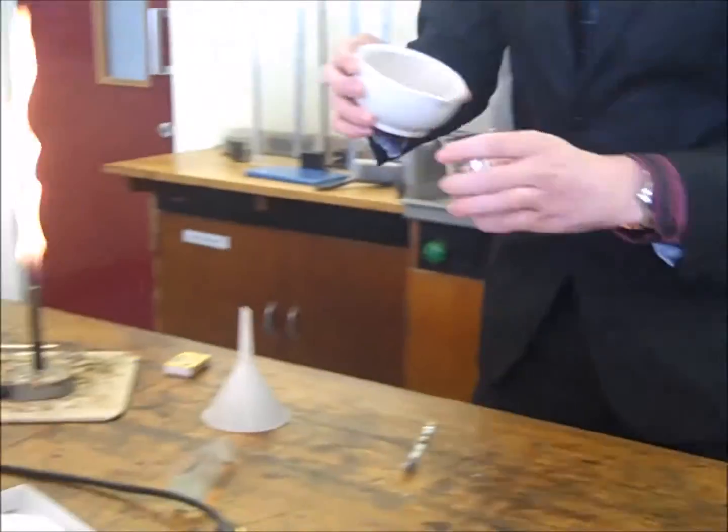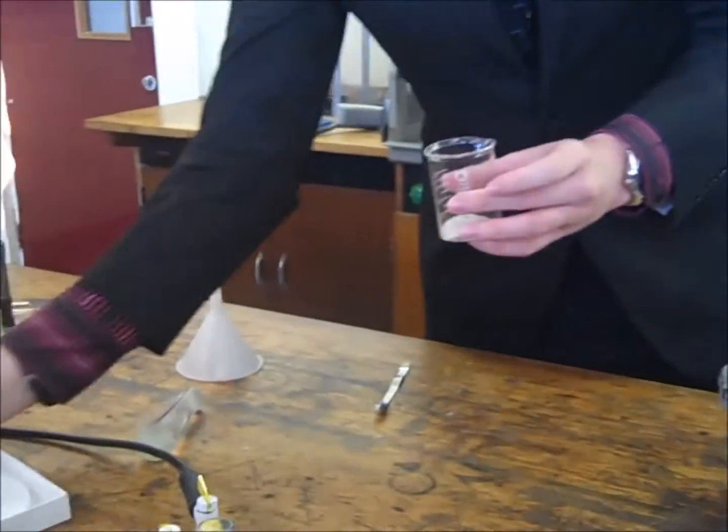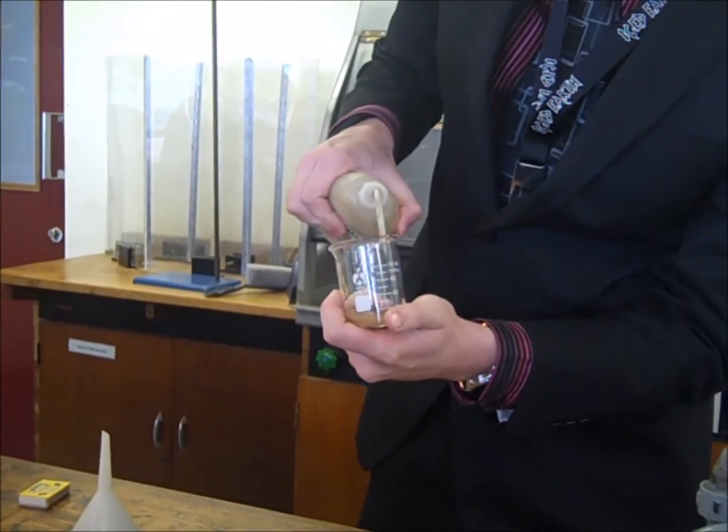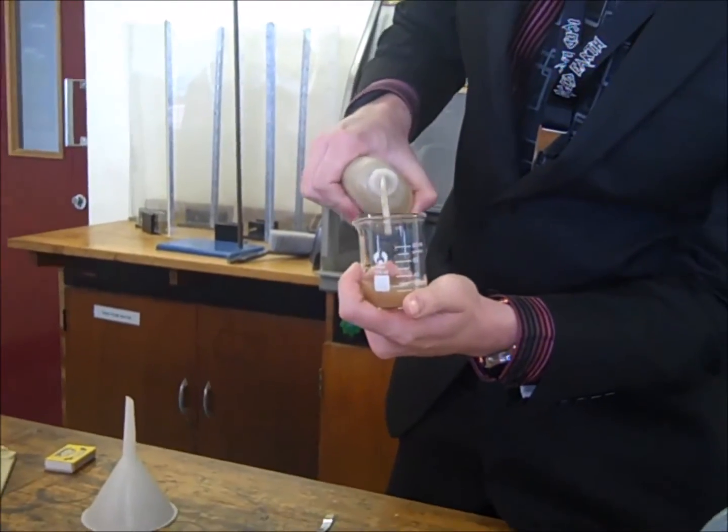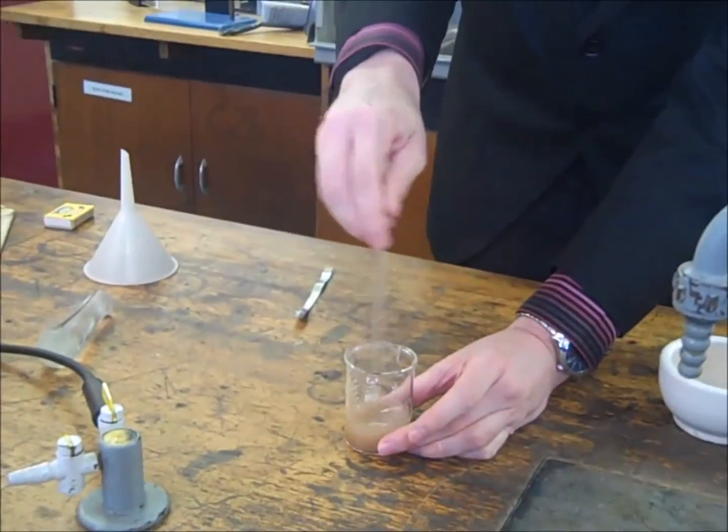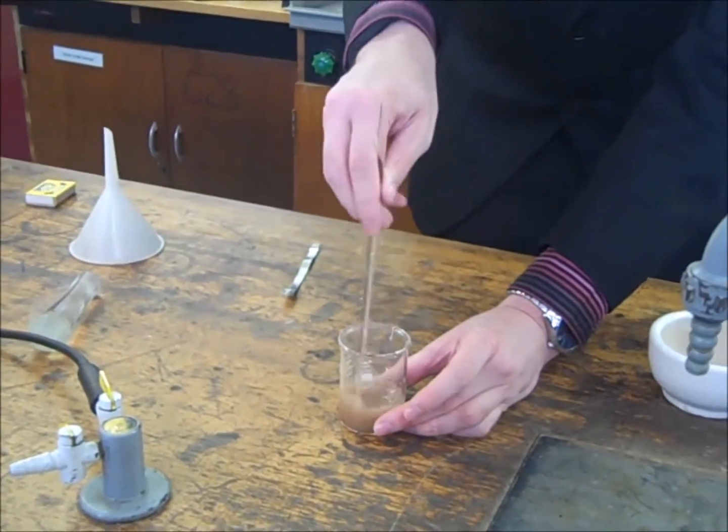Once you've done that, the next step is to dissolve it. What this is going to do is it's going to leave you with your actual salt itself dissolved in the solution. Any impurities, any of the bits of rock will actually stay because they're insoluble. So you do that by adding some distilled water, about 40 ml as I've done here, and then you stir it until it's fully dissolved.